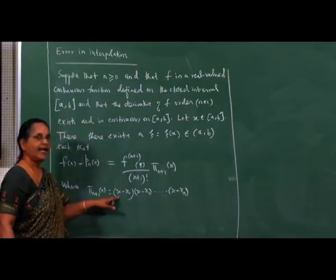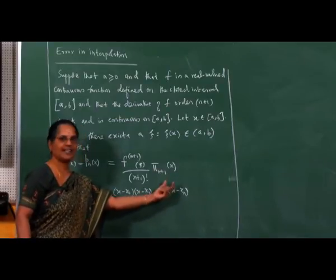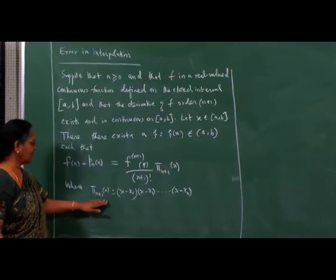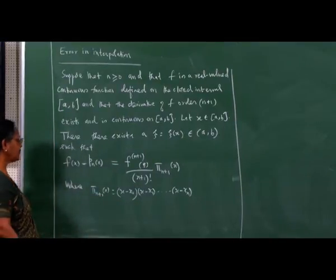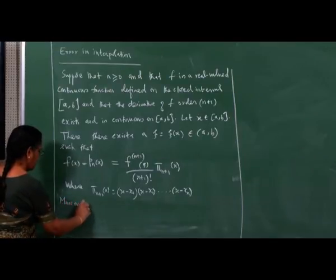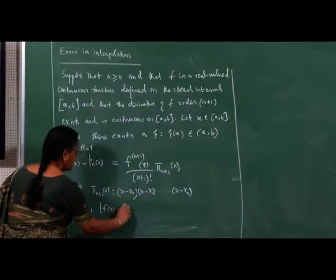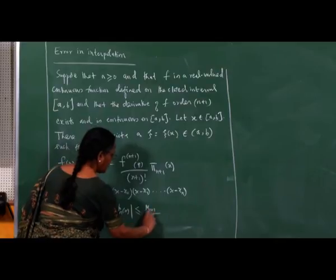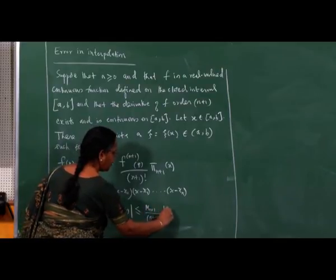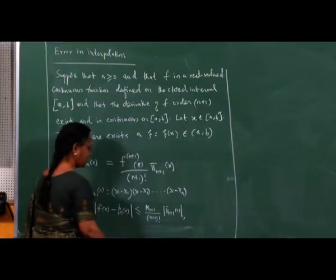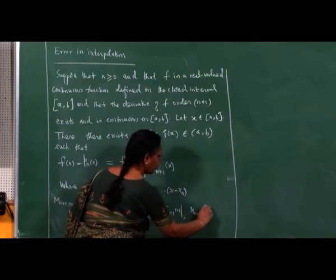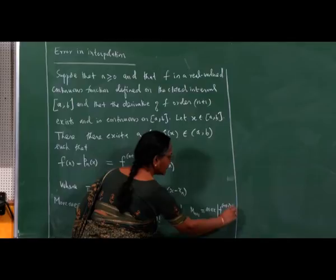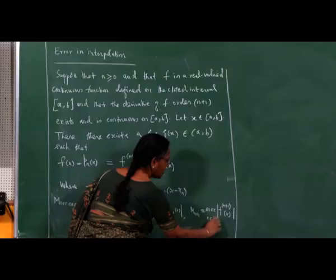This is a polynomial of degree n+1; there are n+1 such factors of the form (x - x₀), (x - x₁), ..., (x - x_n), so π_{n+1}(x) is a polynomial of degree n+1. Moreover, we will show that |f(x) - p_n(x)| ≤ M_{n+1} / (n+1)! · |π_{n+1}(x)|, where M_{n+1} equals the maximum of the modulus of the (n+1)th derivative of f for x in [a, b].